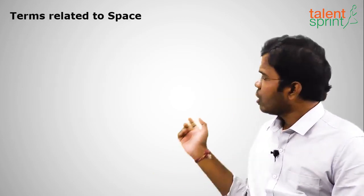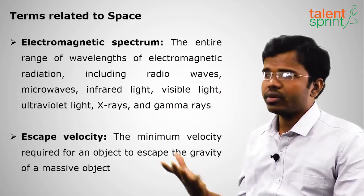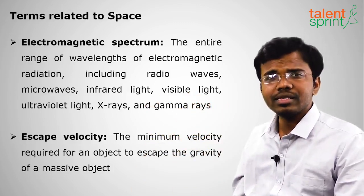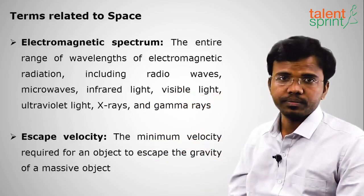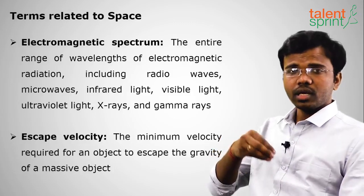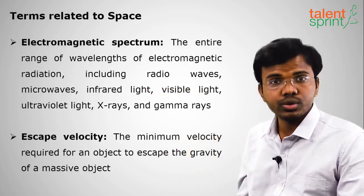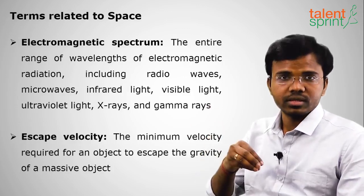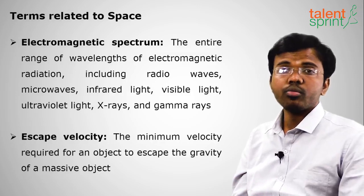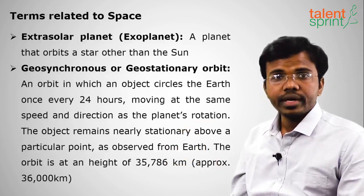The electromagnetic spectrum contains wavelengths of different radiation: ultraviolet rays, radio waves, microwaves, X-rays, visible light, and gamma rays. Escape velocity is the velocity needed for an object to escape from a planet and not return. For Earth, escape velocity is 11.2 kilometers per second — if an object is given this velocity, it will escape Earth and not return.